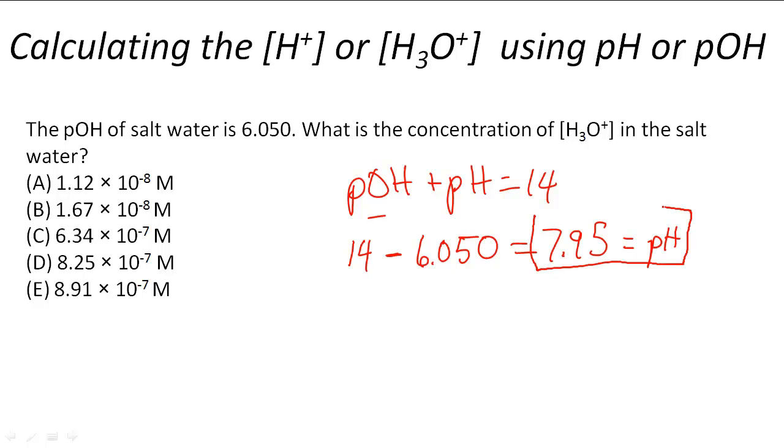And pH we can use that for hydronium because it also indicates how acidic or basic something is. So 7.95 is the pH. And now we can use that to figure out the concentration of H3O plus ions in this salt water.